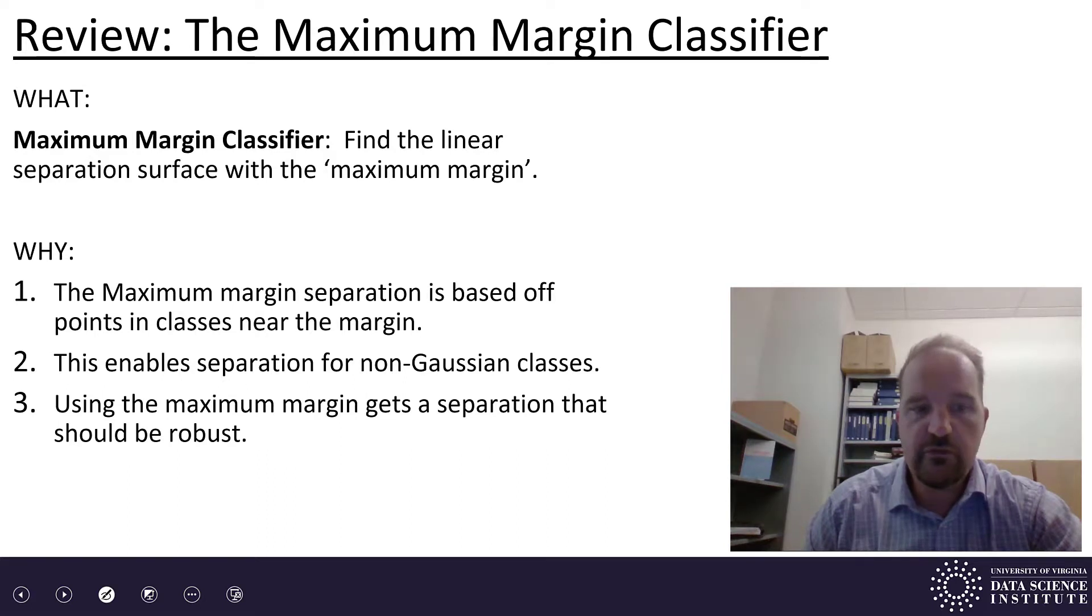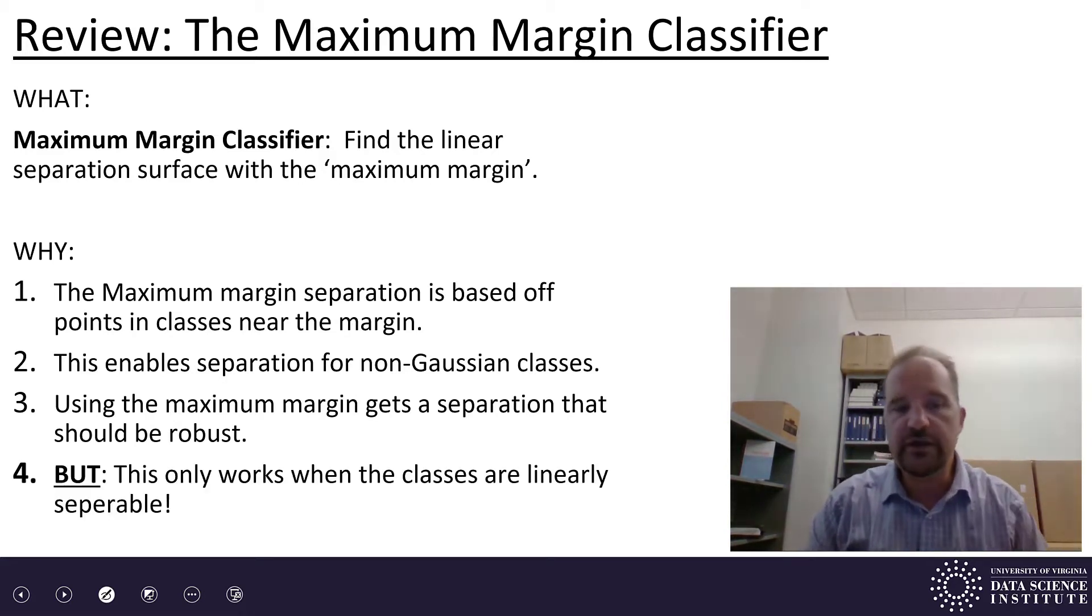Maximum margin classifier again, the separation should be robust. We're talking about when you can find that separation. It gets the maximum error. If you think of the margin, it's the amount of error that could occur or noise or change in the data points close to the separation plane. And if their noise or change in values is less than the margin, then they remain classified properly.